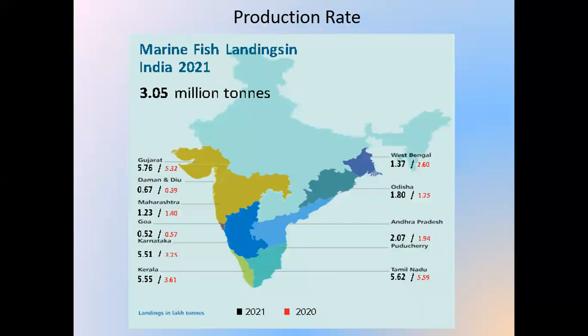This is the production rate data. According to the FAO, marine fish landings in India 2021 data is represented here. In India in 2021, 3.05 million tons production rate was recorded from the marine water body. Gujarat was the leading state which contributed the most marine fisheries in India, and second was West Bengal, and third was Daman and Diu, Odisha, Maharashtra, then Andhra Pradesh, Karnataka, Puducherry, Kerala, and Tamil Nadu.